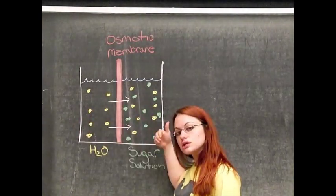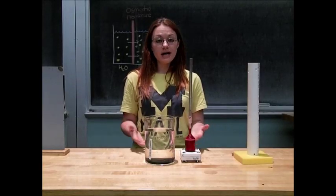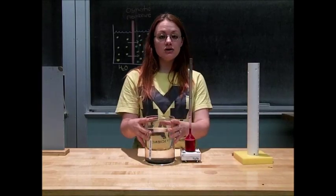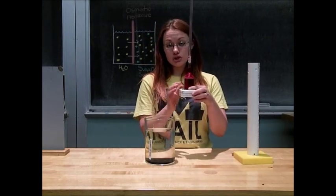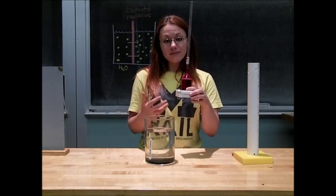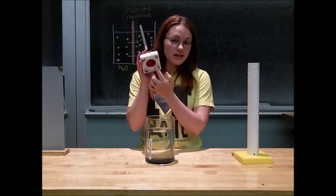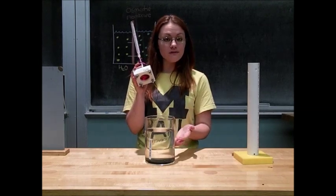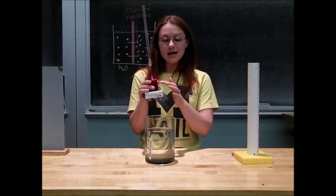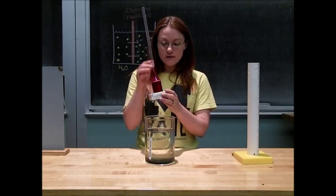This process of diffusion across the membrane is known as osmosis. To demonstrate osmosis, we have a container of regular water and a container of super saturated sugar solution. The osmotic membrane between these two will be a thin film of kidney dialysis tubing. This tubing allows for the influx of water but does not allow for the passage of the sugar solution.